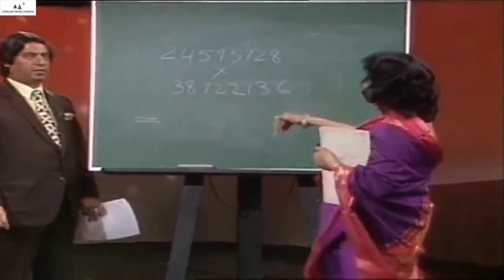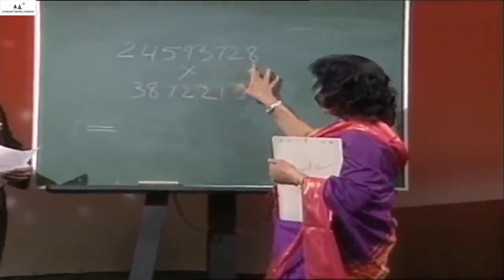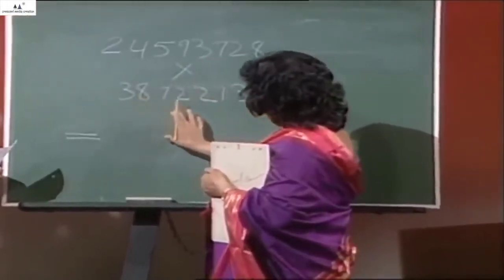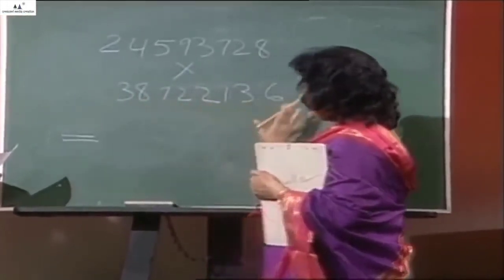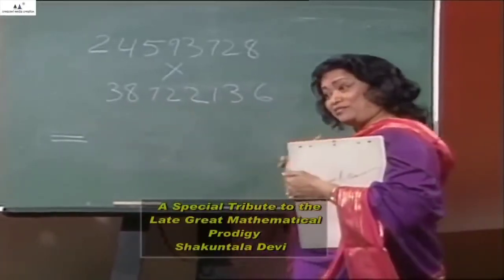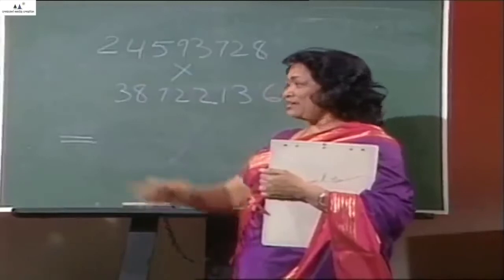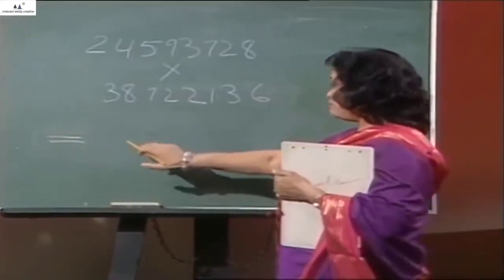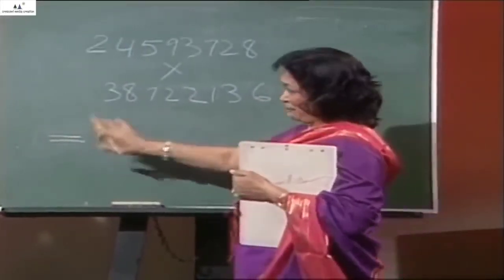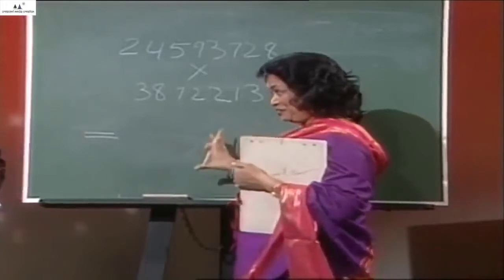Now the question is 24593728 multiplied by 38722136. Now tell me, do you want me to give you the answer from this side to this side or this side to this side? Oh my god. I don't think I want the answer. What a choice. Tell me. Go backwards. I think let Chandrasekhar decide. Chandrasekhar, do you want the answer from this side to this side or this side to this side? We'll keep the unconventional method later on. Let's go the conventional route first. This way? Yeah. We have enough problem digesting the multiplication itself.